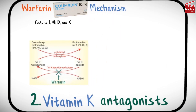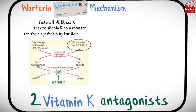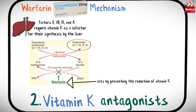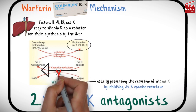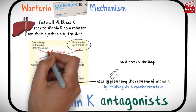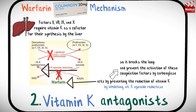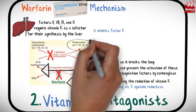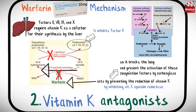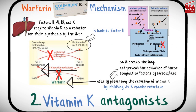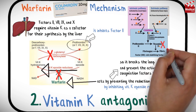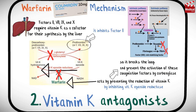Factors 2, 7, 9, and 10 require vitamin K as a cofactor for their synthesis by the liver. Warfarin acts by preventing the reduction of vitamin K by inhibiting vitamin K epoxide reductase, breaking the loop and preventing the activation of these coagulation factors by carboxylase. It inhibits factor 2, which is prothrombin, thereby preventing the formation of thrombin and subsequently fibrin, so it prevents clot formation.